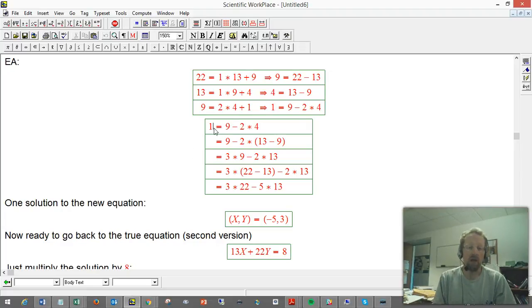So now we're going to just take one and progressively express it in terms of numbers that are going higher up the chain until we get to the numbers we really want. So it's nine minus two times four like we just had. We substitute in that the four can be expressed in terms of thirteen and nine, namely it's thirteen minus nine. We go ahead and expand and simplify. Three times nine minus two times thirteen, yes. Twenty-seven minus twenty-six, that's definitely one.